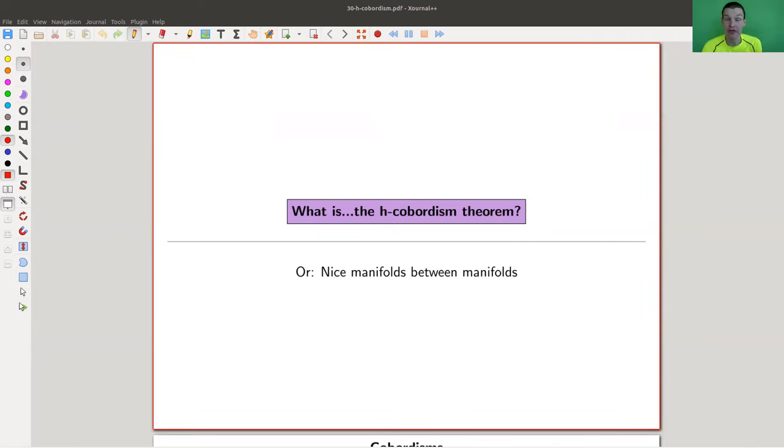Okay, welcome everyone to my continuation of what is geometric topology. Today, maybe one of the most important theorems in the last 60 years or so in geometric topology, the so-called h-cobordism theorem. So I will tell you what the h is, I will tell you what a cobordism is, but essentially these are nice manifolds between manifolds. And this is what this is all about.